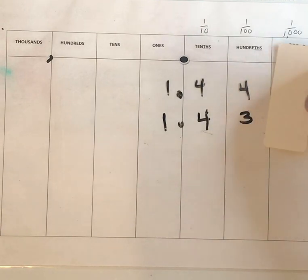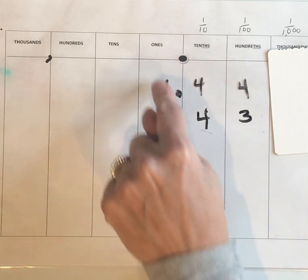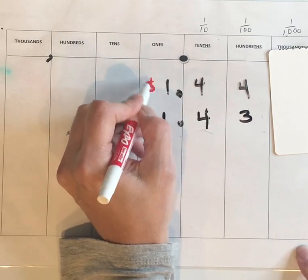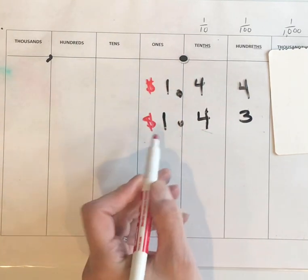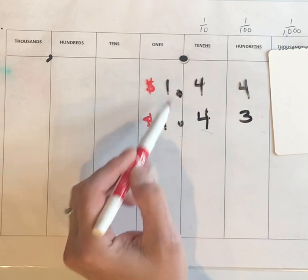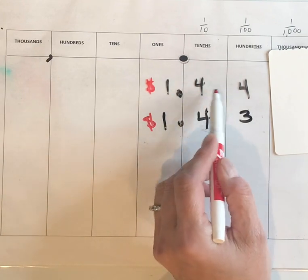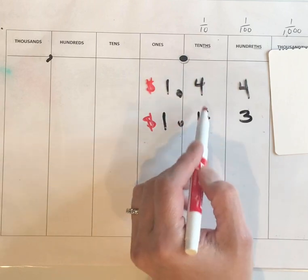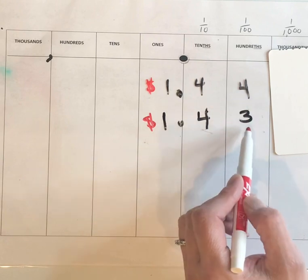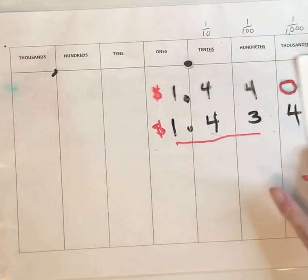Remember that a tenth is a dime. So if we treat this like money, we have one dollar and 44 cents versus one dollar and 43 cents. Each amount has one dollar, and both have four tenths — which is the same as 40 cents. Then we move over to the pennies, or the hundredths place: we only have three pennies here but four pennies there, so we know that 1.44 is larger.